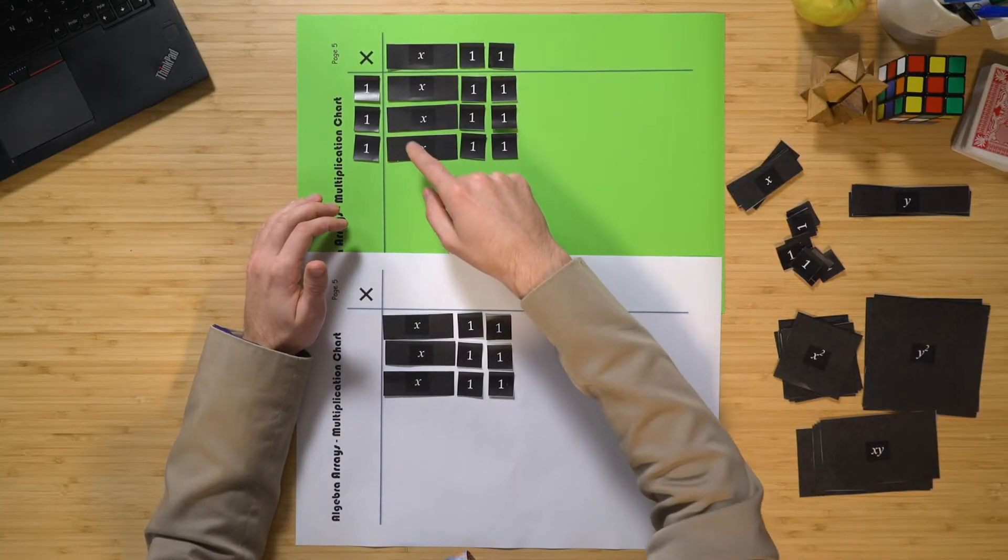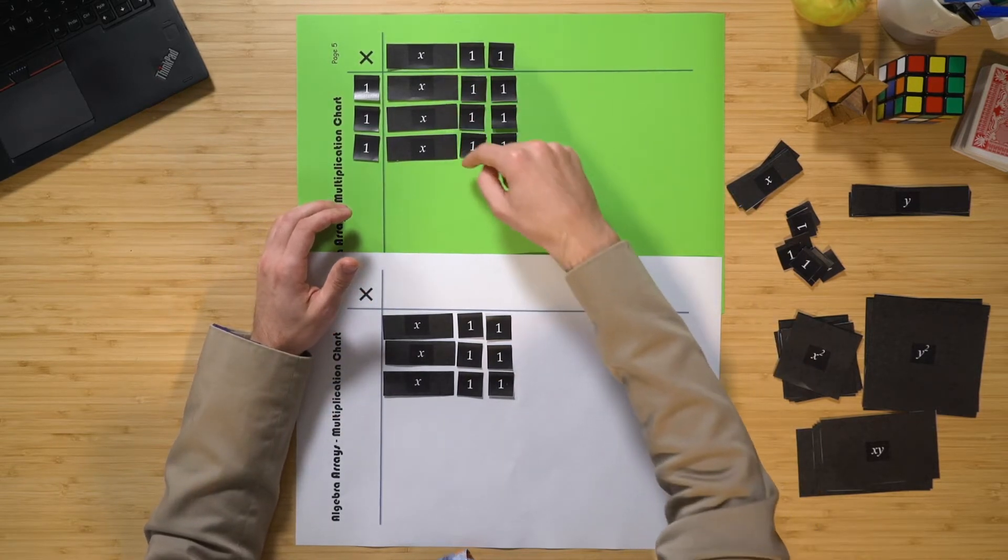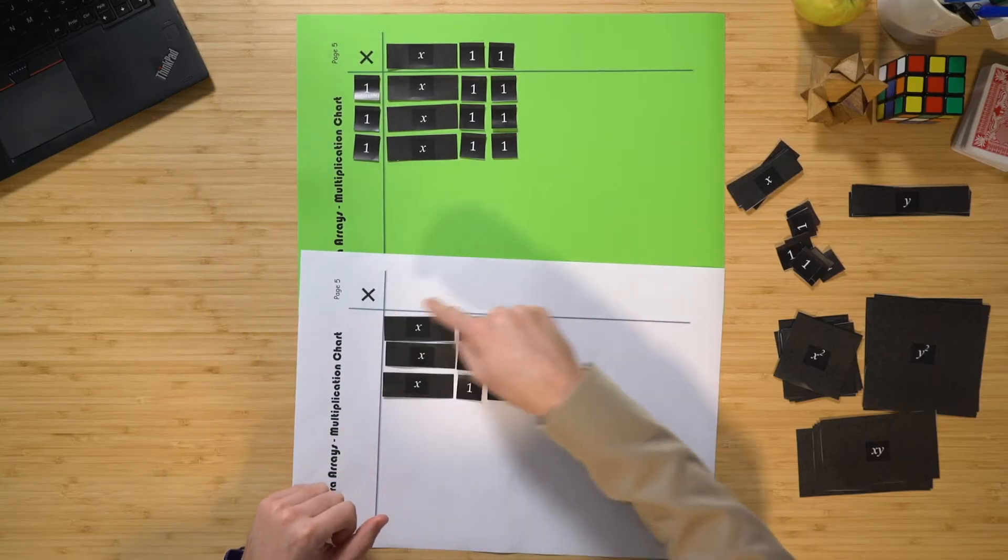Now, before we get students to even factorise using this model, it's really important that we make sure that they've actually understood how to expand using the model first. That is, they can have a look at this and they know that when I have 3 multiplied by x plus 2, that they're going to grab the pieces and place them down like this so you can see it gets 3x plus 6. Because once they understand how to use this model, all they really need to know is two things. That is, when factorising, it's like starting with the answer and we need to work backwards to figure out what goes on the outside. And then the second thing is the answer always forms a rectangle.